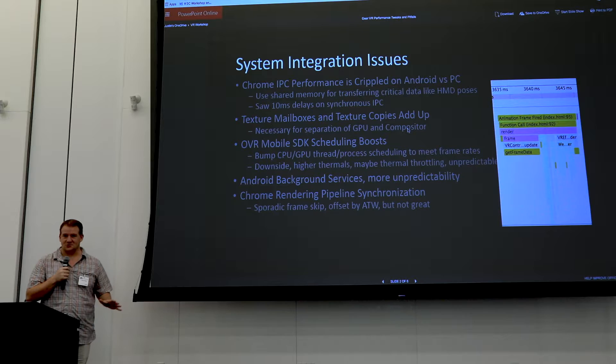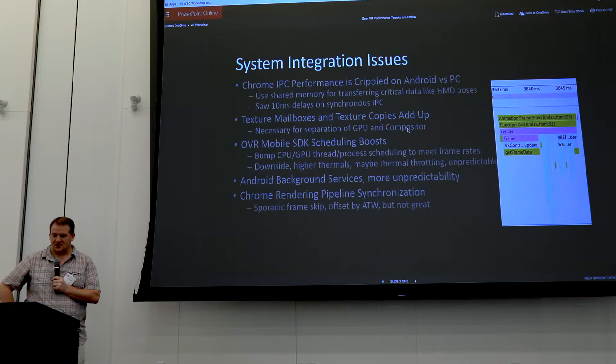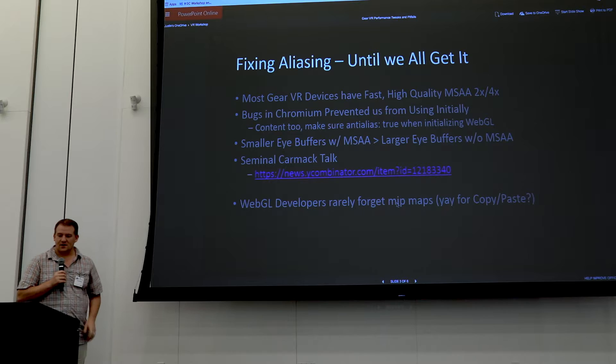Android background services are unpredictable and constantly drop your frame rate. There was also a lot of synchronization in the Chromium pipeline that we still have not fully explained, and sometimes that would lead to sporadic frame skips. We've offset that with ATW (Asynchronous TimeWarp).